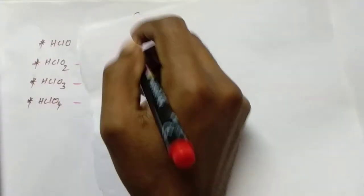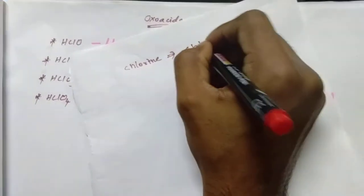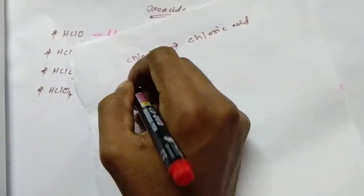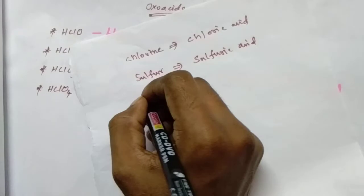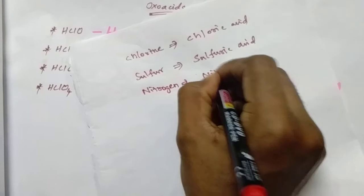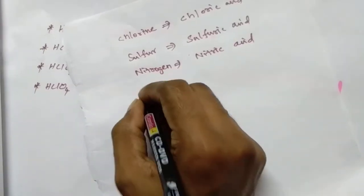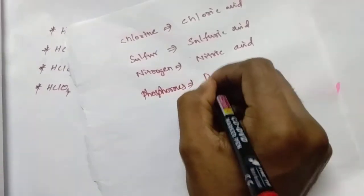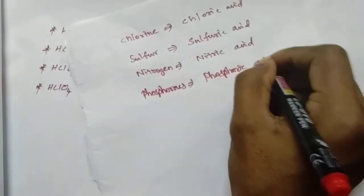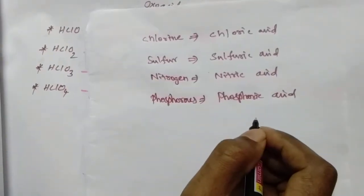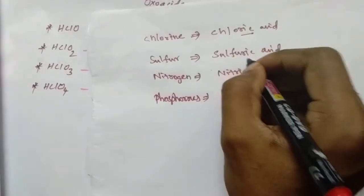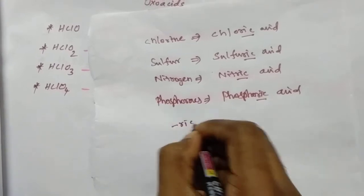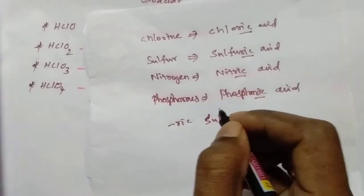Look at the parent acid in Chlorine oxy acids. The parent acid is the Chlorine Oxy Acid. For Sulfur, the parent acid is Sulfuric Acid. For Nitrogen, Nitric Acid. For Phosphorus, Phosphoric Acid. Is there any pattern? Yes, you can see all acids have one pattern - all acids have the suffix -RIC. That is our first clue.